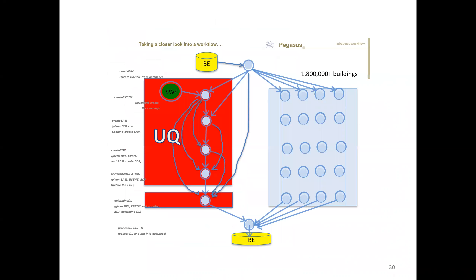On top of the whole workflow, we throw uncertainty quantification around everything. We don't know the heights of buildings exactly, don't know the mass of the buildings exactly, don't know the ground motions exactly — there's a whole bunch of uncertainty involved, so we wrap UQ around the entire thing.